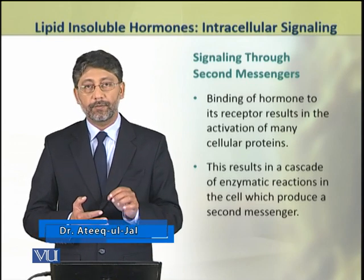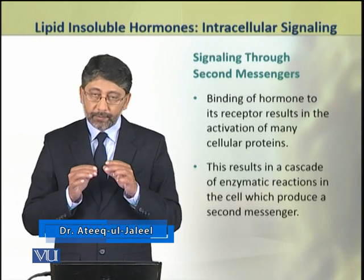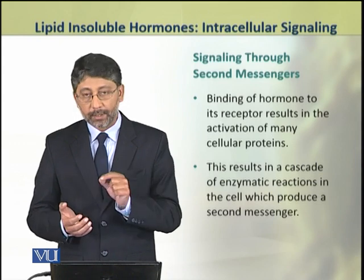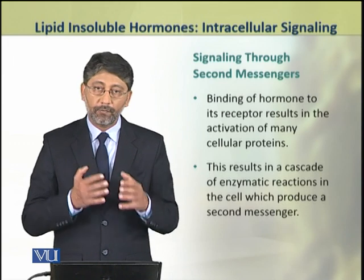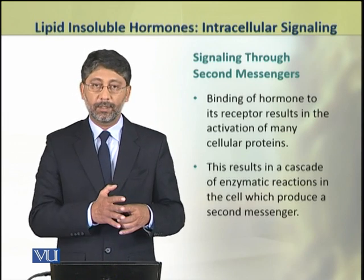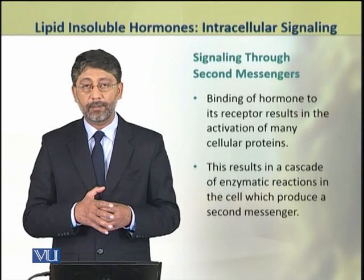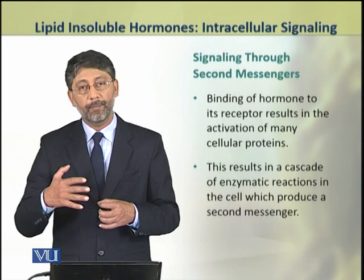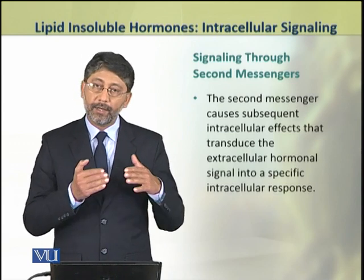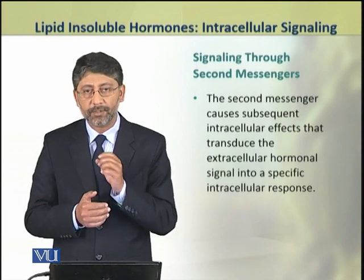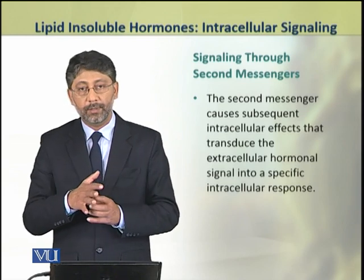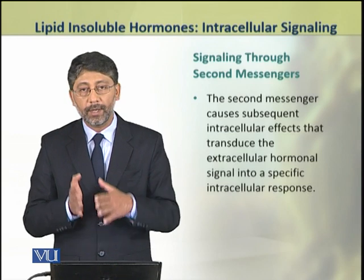The binding of hormone to its receptor results in the activation of many cellular proteins. This results in a cascade of chemical reactions which involve a number of enzymes and proteins. As a result, a second messenger is formed. It is this second messenger through which the hormonal action propagates further. The second messenger subsequently causes intracellular effects that transduce the extracellular signal received from the hormone into the specific intracellular response.